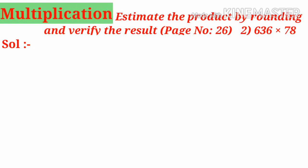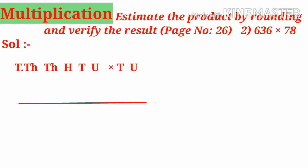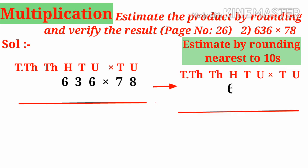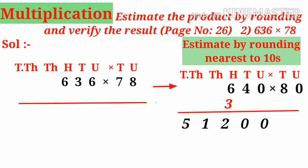Next, multiplication: estimate the product by rounding and verify the result. Page number 26 in the textbook, second problem: 636 into 78. Write these numbers in their place values. Before doing the actual multiplication, let us estimate by rounding to the nearest ten, since we have a two-digit and a three-digit number. So 636 becomes 640 and 78 becomes 80. Then 640 × 80: 8 × 4 is 32, carry 3; 8 × 6 is 48 plus 3 is 51. The estimated product is 51200.